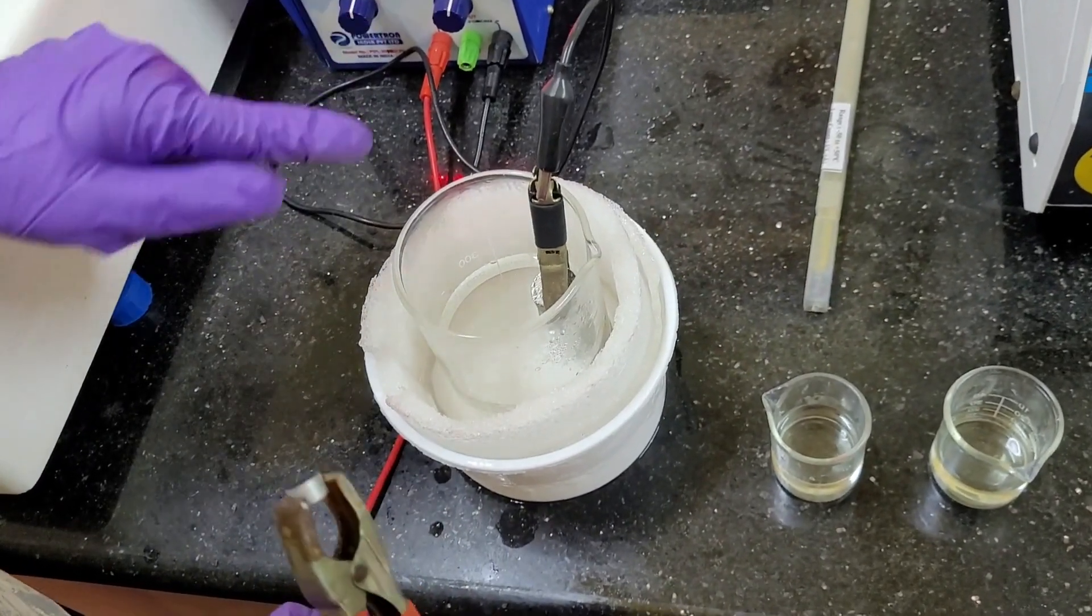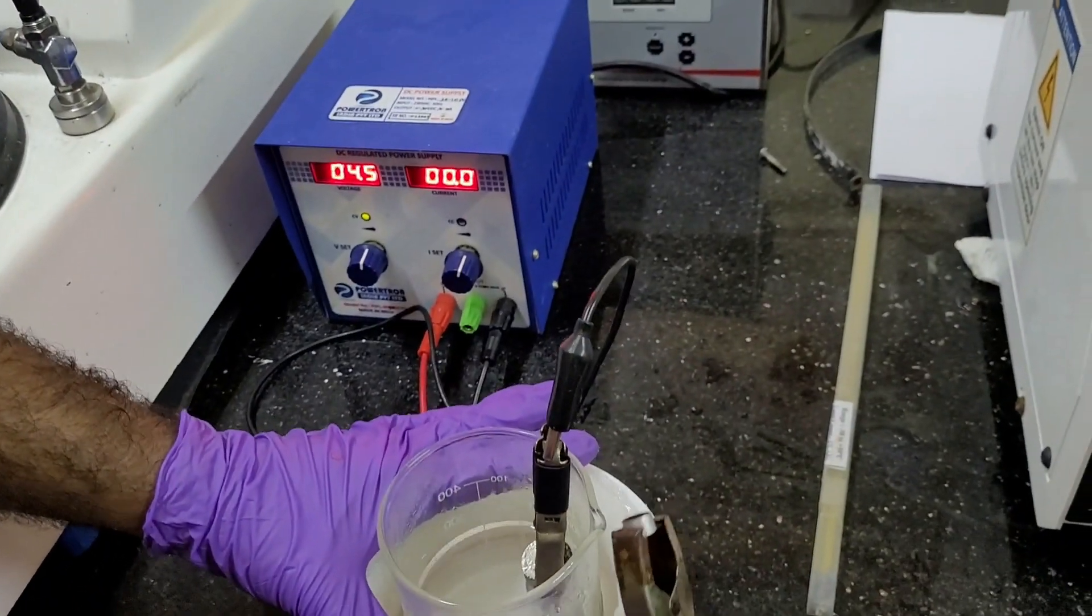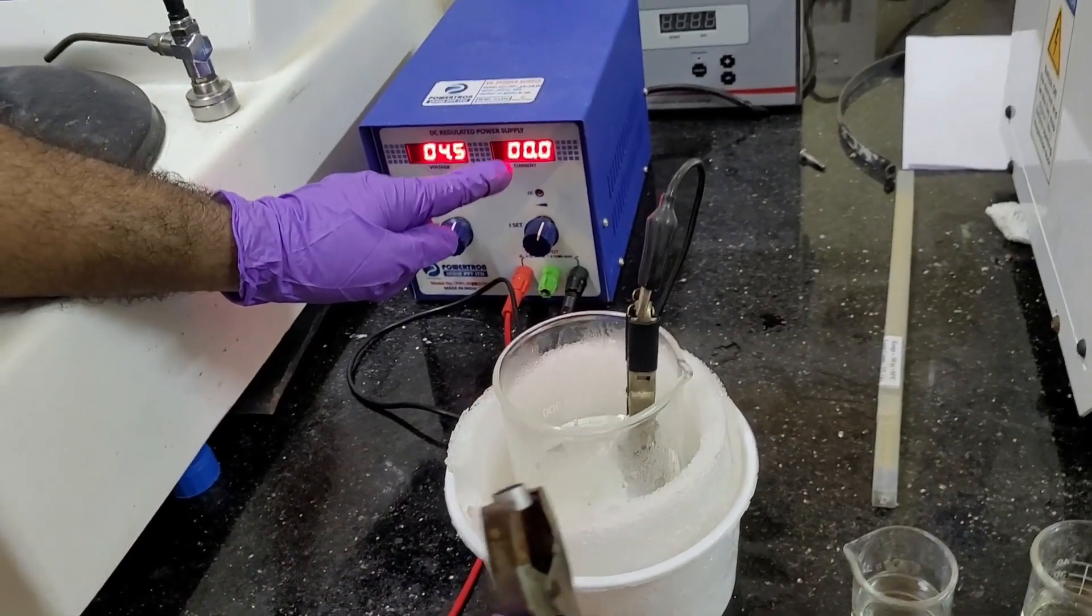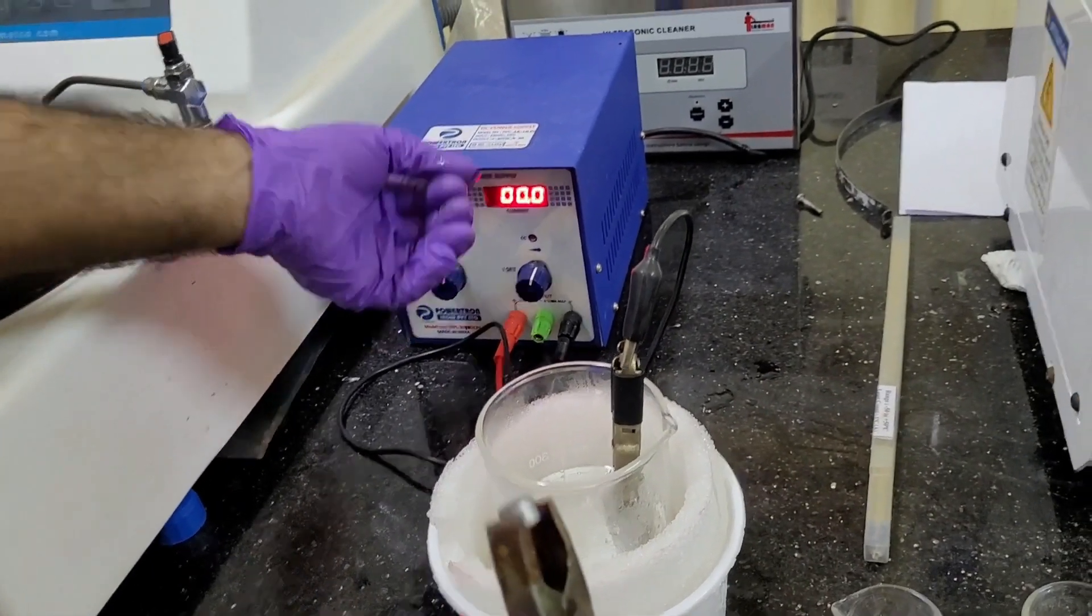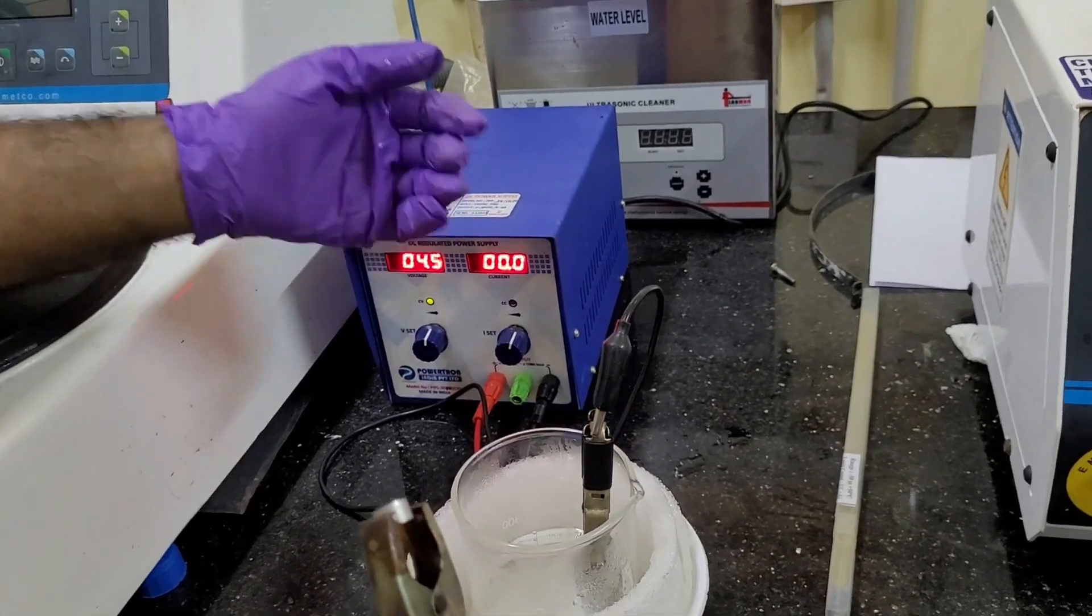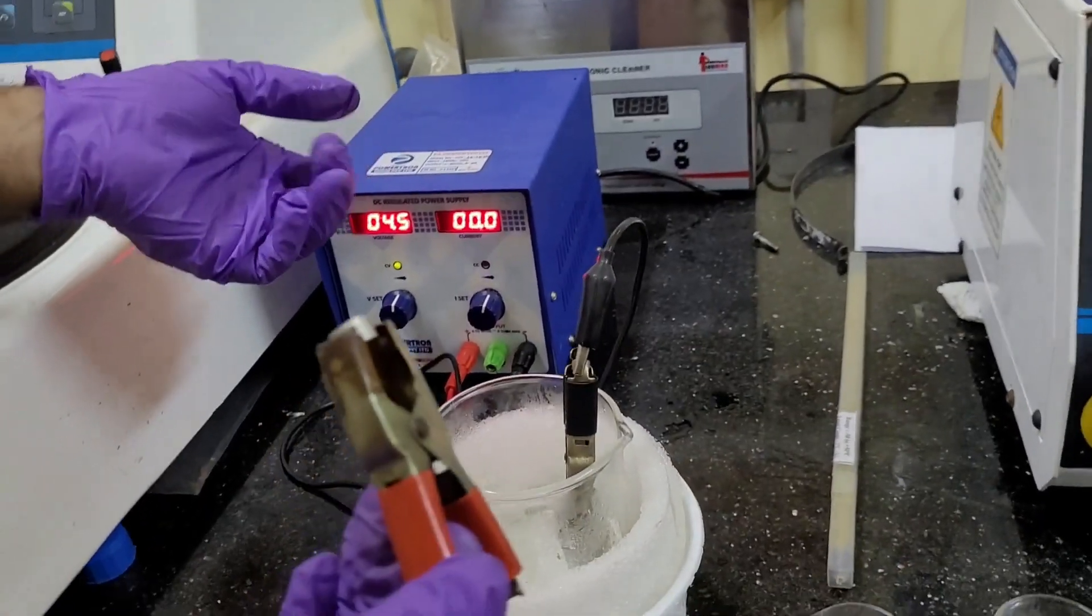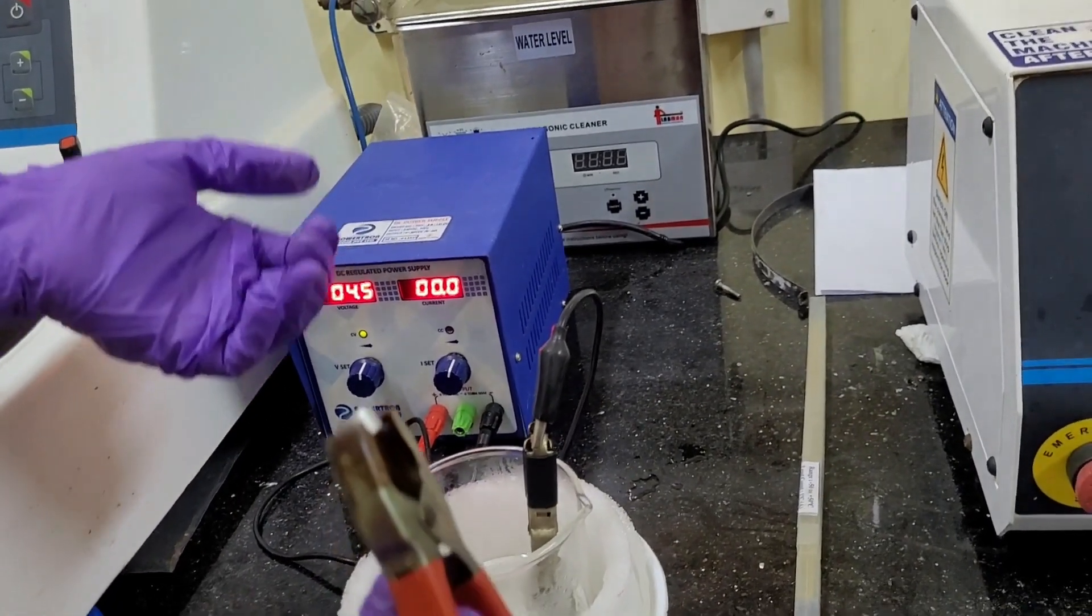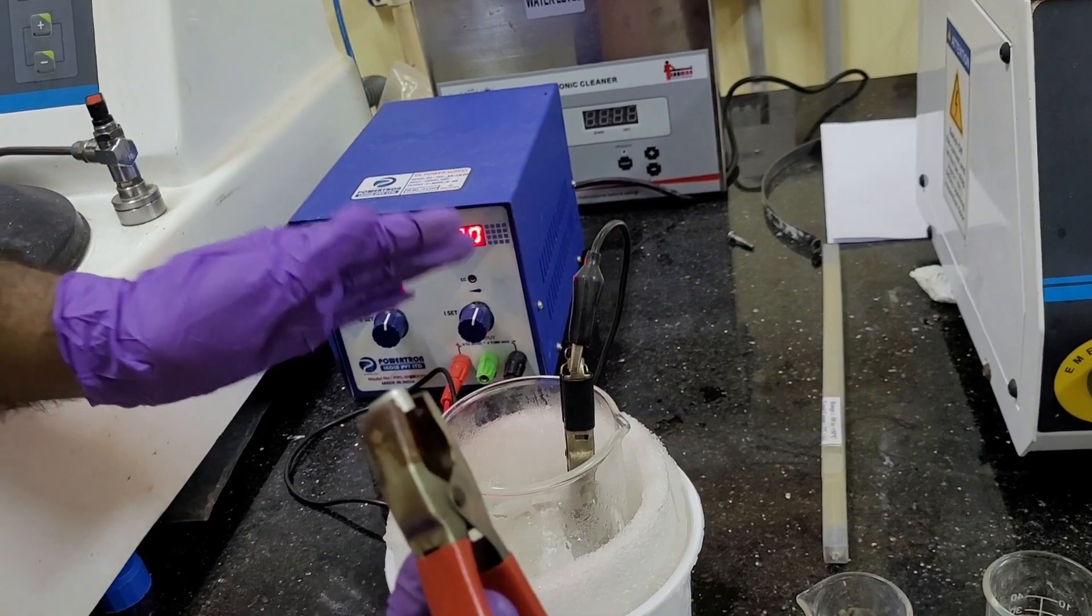So, the main important point is, when we are doing the electropolishing, we have to keep in mind that how much current is appearing. So, if current is appearing more than our targeted, targeted current or less than targeted current, so, we have to immediately stop the electropolishing.